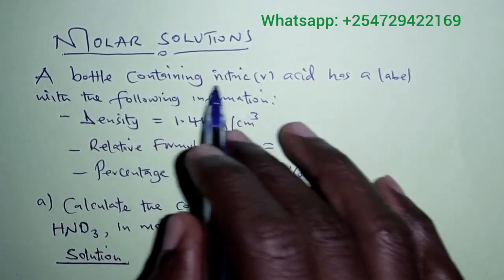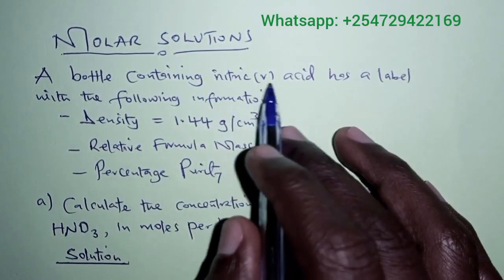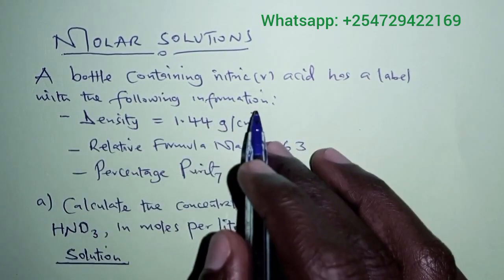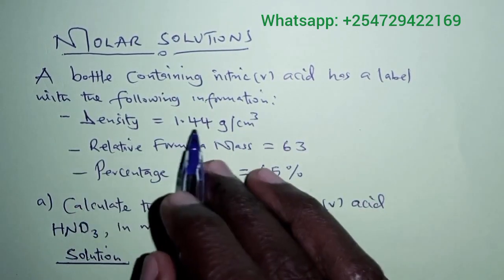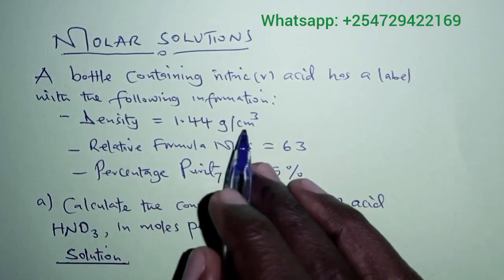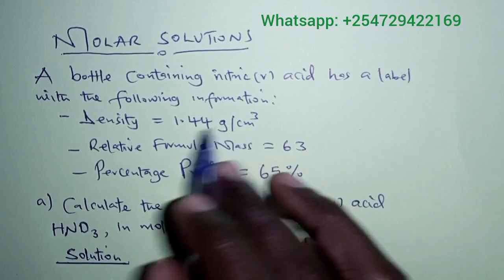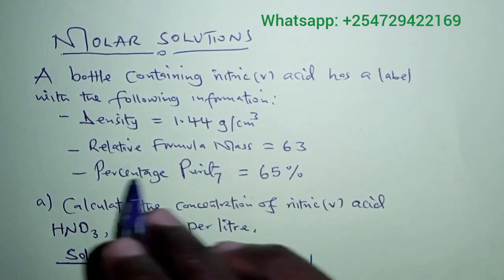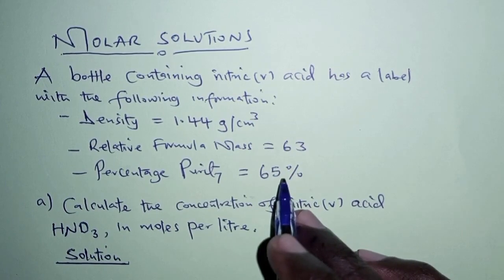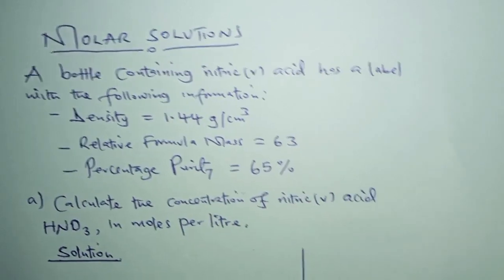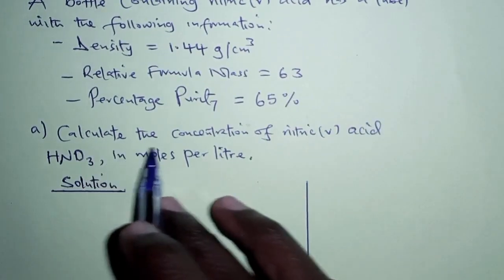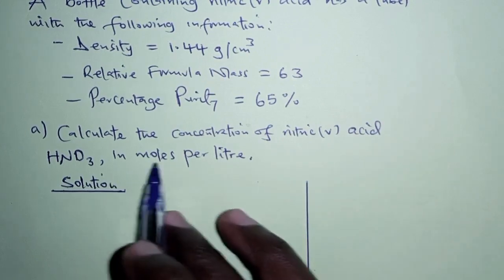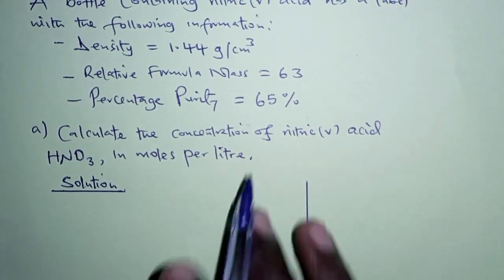A bottle containing nitric acid has a label with the following information: density 1.44 grams per cubic centimeters, relative formula mass 63, percentage purity 65%. Calculate the concentration of nitric acid in moles per liter.